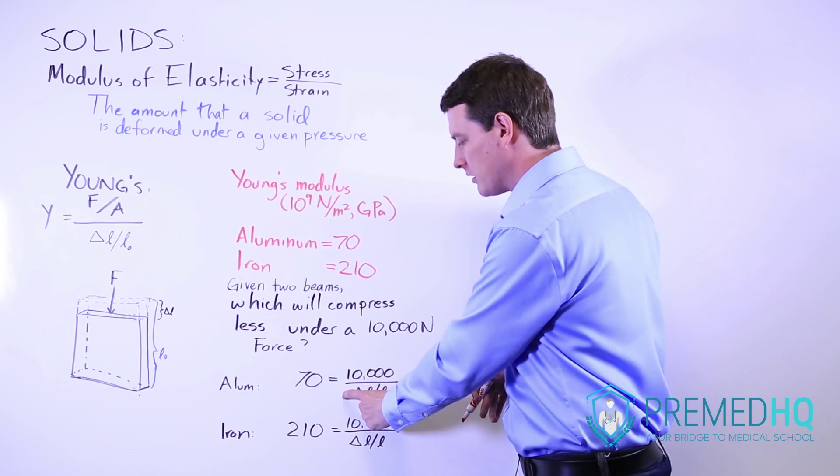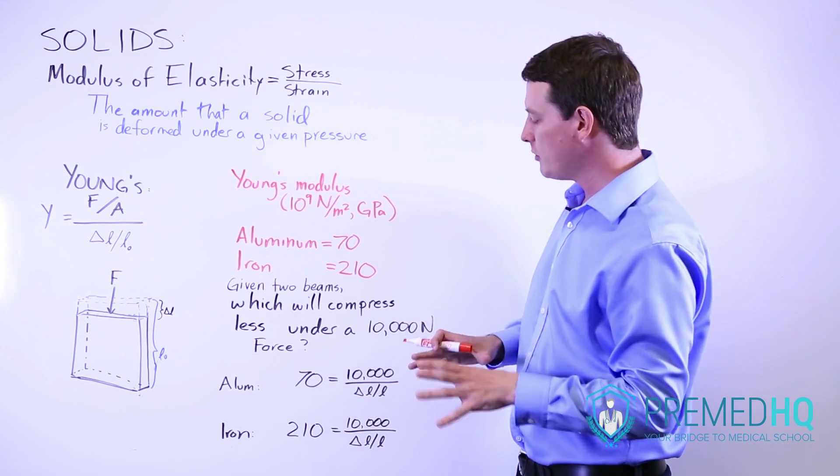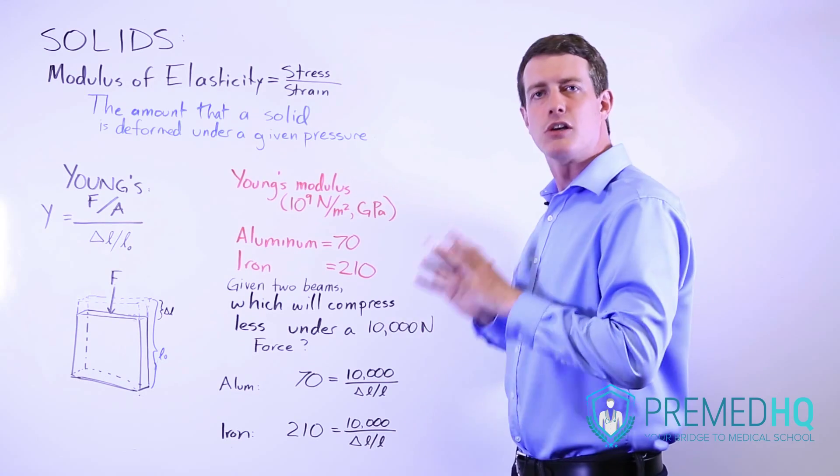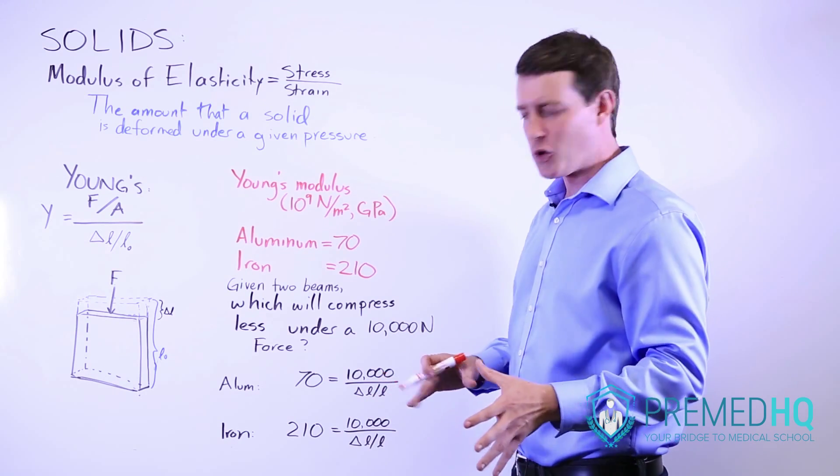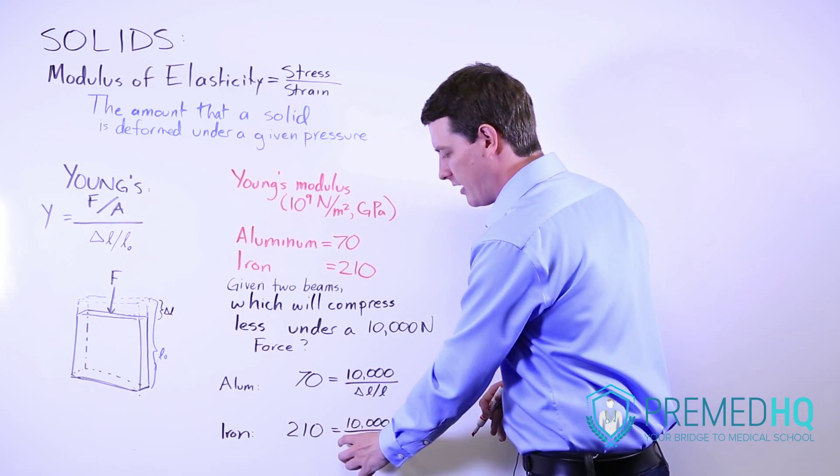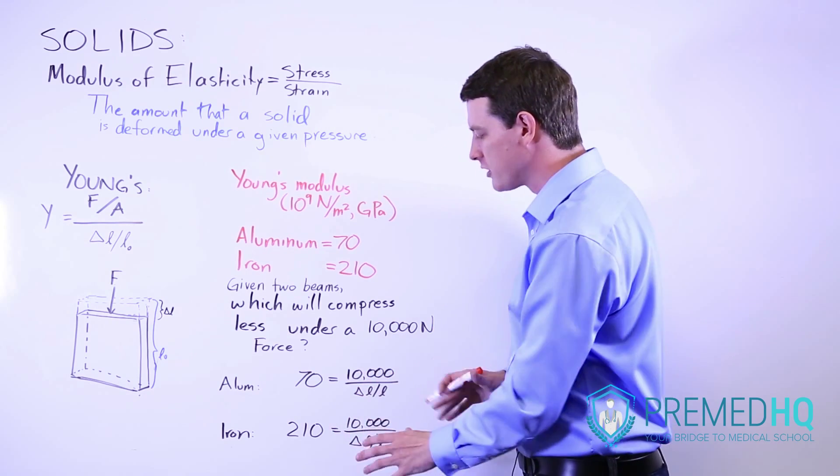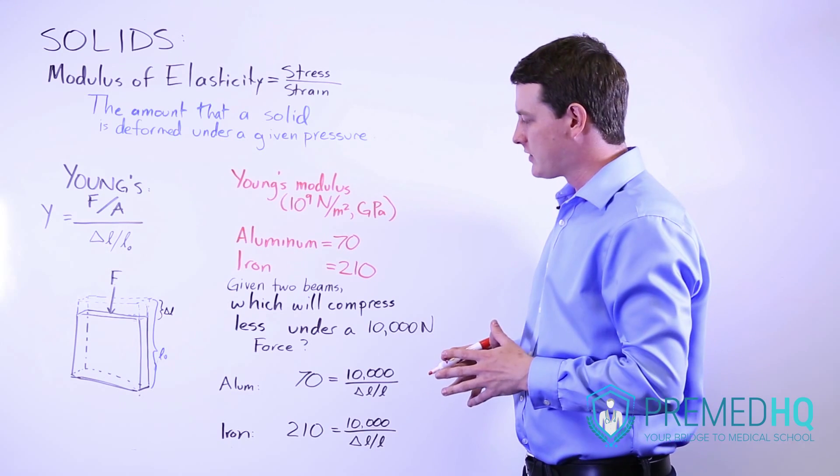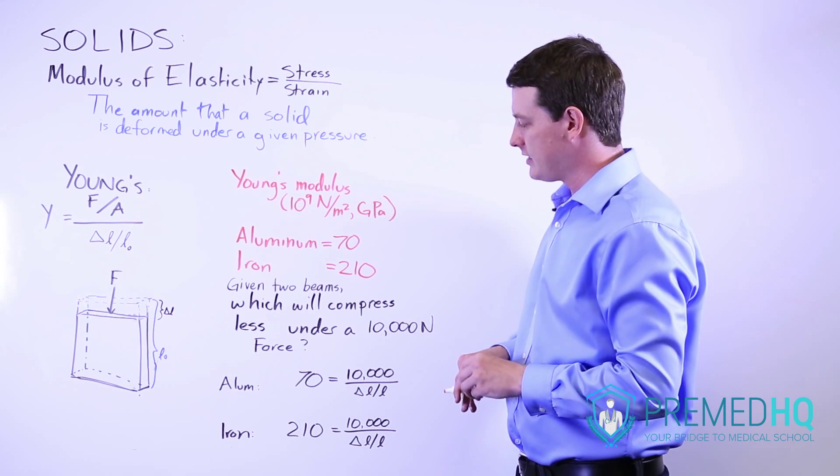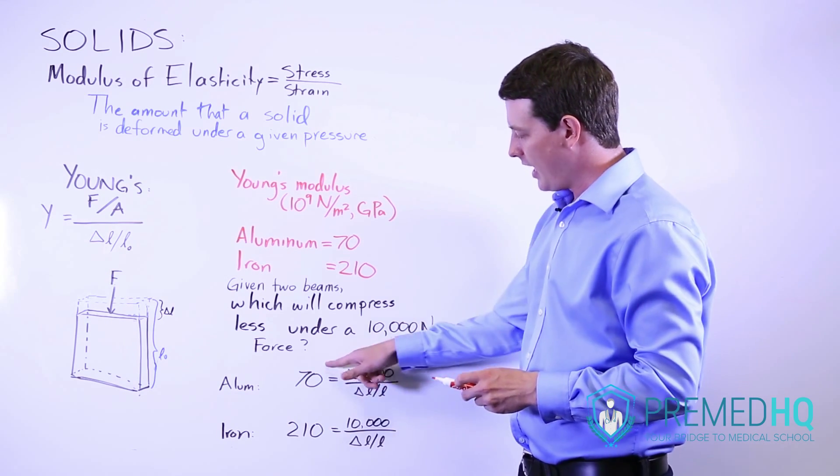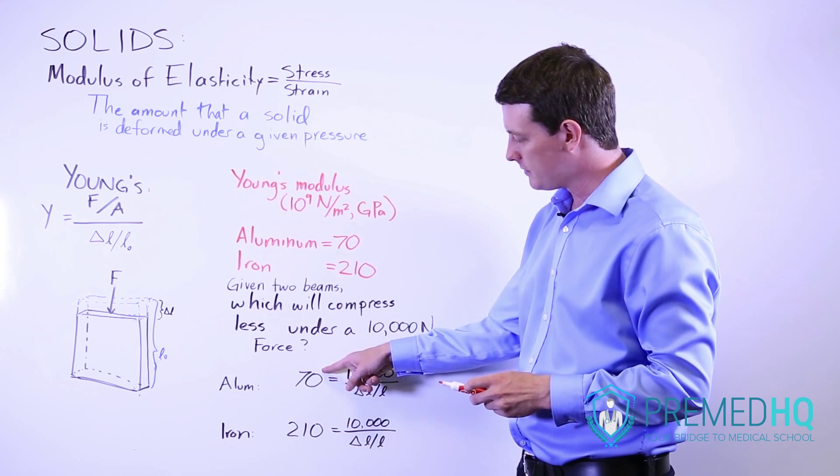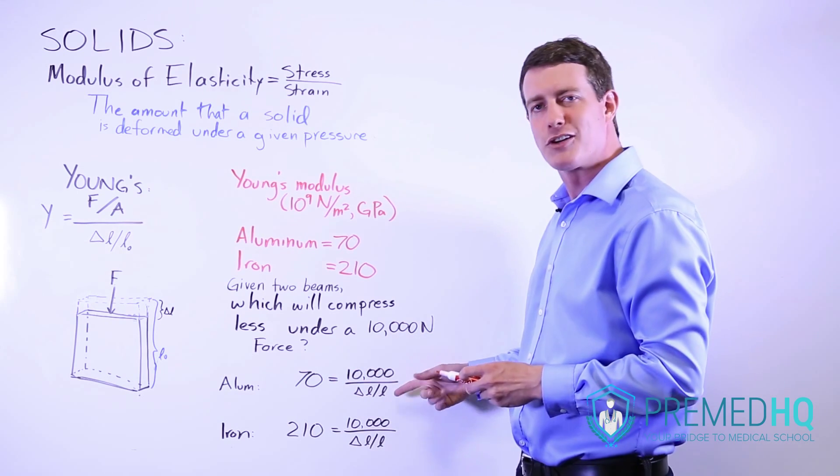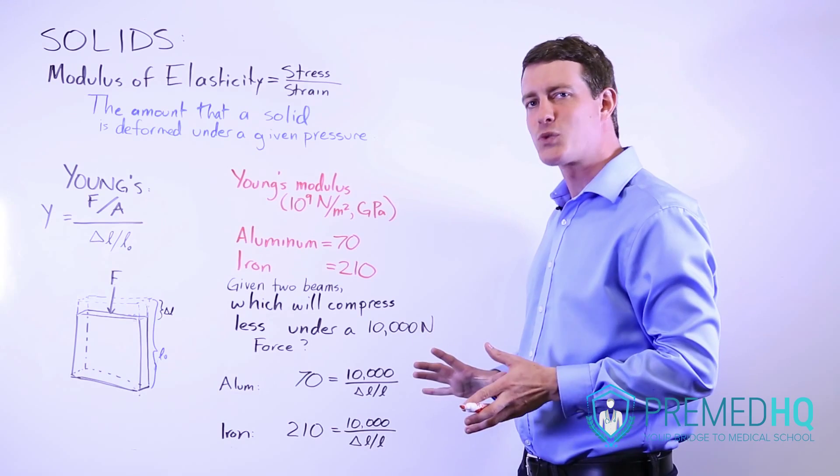Now what we know is that for 10,000 divided by something to be equal to 70 what we need to have is we need this number to be larger. So that means the aluminum will compress to a greater degree under this force whereas the iron will compress to a lower degree because 10,000 divided by something equals only 210. And so the bottom line is that if this is constant and this number is smaller that means that you must have a greater denominator and I think that's the best way to look at it.